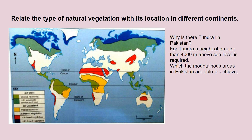Why do we have tundra in Pakistan? On the world map, tundra is only shown in the arctic zone, but Pakistan is located outside that zone. That's because for tundra vegetation we basically need to achieve a height of 4000 meters above sea level, which the mountainous areas of Pakistan are able to achieve.